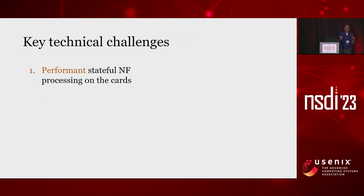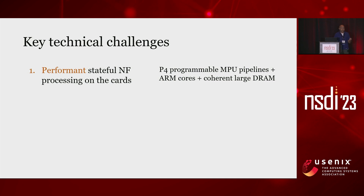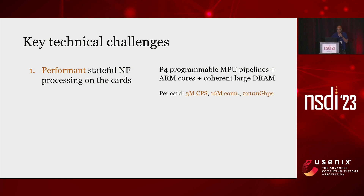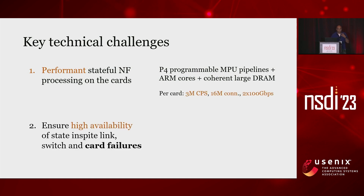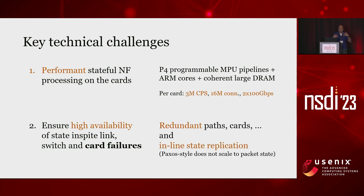Here are some of the key challenges. The core of the work is how to do stateful network processing fast in the DPU. We use a novel DPU which, if you know Tofino, is P4 programmable. But in addition to packet processing, we have large DRAM state — tens of gigabytes and millions of connections — and new P4 programmable pipelines that can access that DRAM state. A typical concern with disaggregation is high availability when links, switches, or cards fail. We do the usual redundancy, but also have some novel techniques.